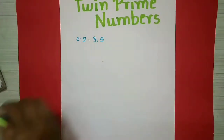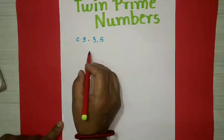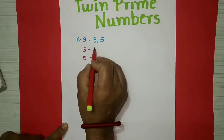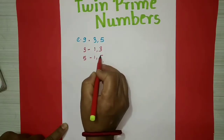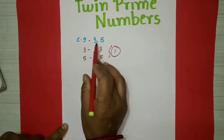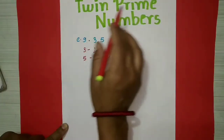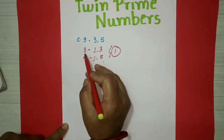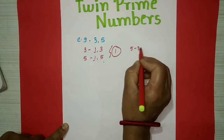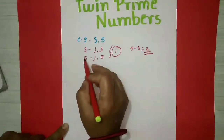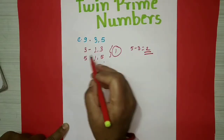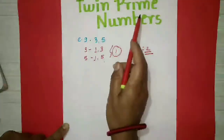3 and 5. The divisors of 3 are 1 and 3; divisors of 5 are 1 and 5. The common number is 1, so 3 and 5 are co-prime numbers. And for twin prime numbers, the difference between these two co-prime numbers should be 2 — 5 minus 3 equals 2. So they are twin prime numbers.